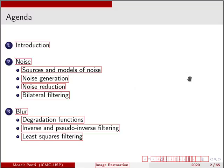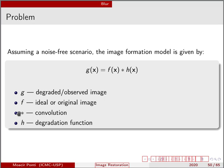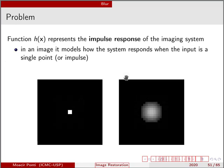In the image restoration problem, the second effect that often degrades images is blur. Blur can also be formulated using an equation, and we may assume a noise-free scenario to facilitate this formulation. Here we can see that G, which is the observed or degraded image, is given by a convolution between F and some degradation function H. So let us say that we have an image that actually has only a single point, a single dot.